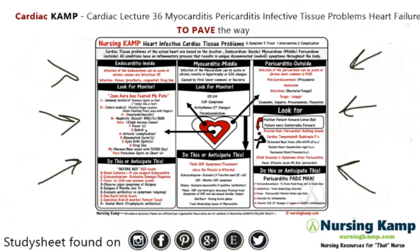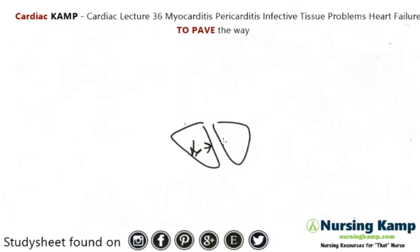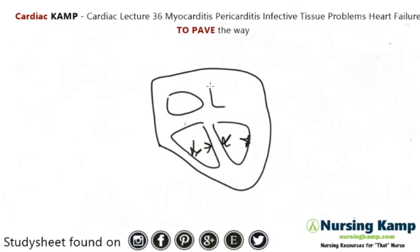In my previous lecture, I talked about the location of infection — endocarditis is very specific to the inside of the heart, usually from outside problems like drug use. But what we're going to talk about now is myocarditis. Myocarditis is a smaller topic, but the interesting thing about it is it can be viral.